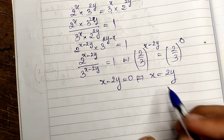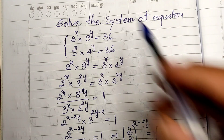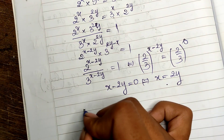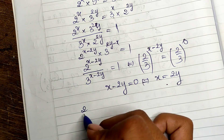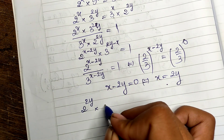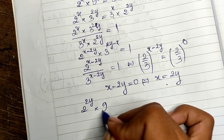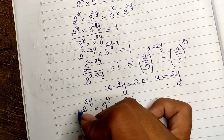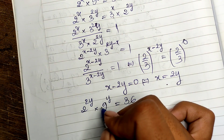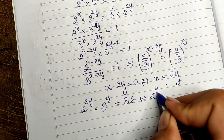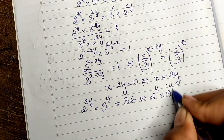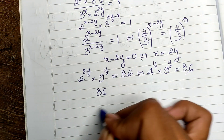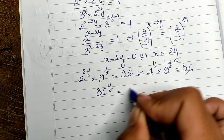Now with x equal to 2y, I substitute back into the first equation. So I get 2^(2y) times 9^y equals 36. Since 2^(2y) equals 4^y, this becomes 4^y times 9^y equals 36, which gives us 36^y equals 36.